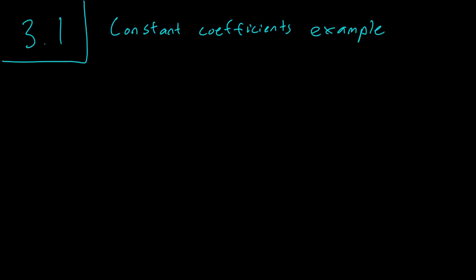Hello class, this is section 3.1 and in this video we are going to work out an example where our second-order homogeneous linear equation has constant coefficients. In other words, there's no x dependence anywhere. So let's consider this example: if we just have y double prime minus y prime minus 2y equals 0.